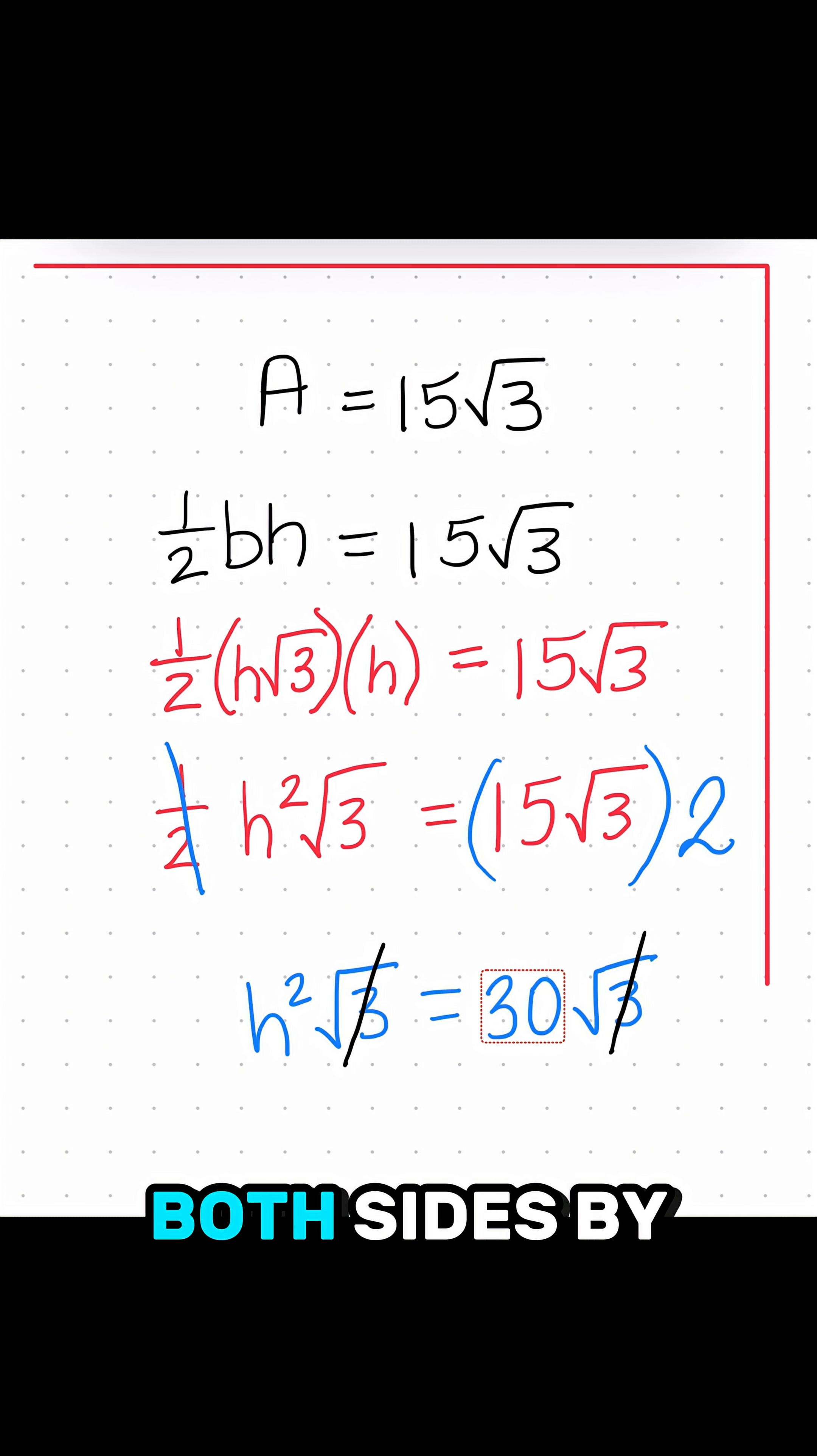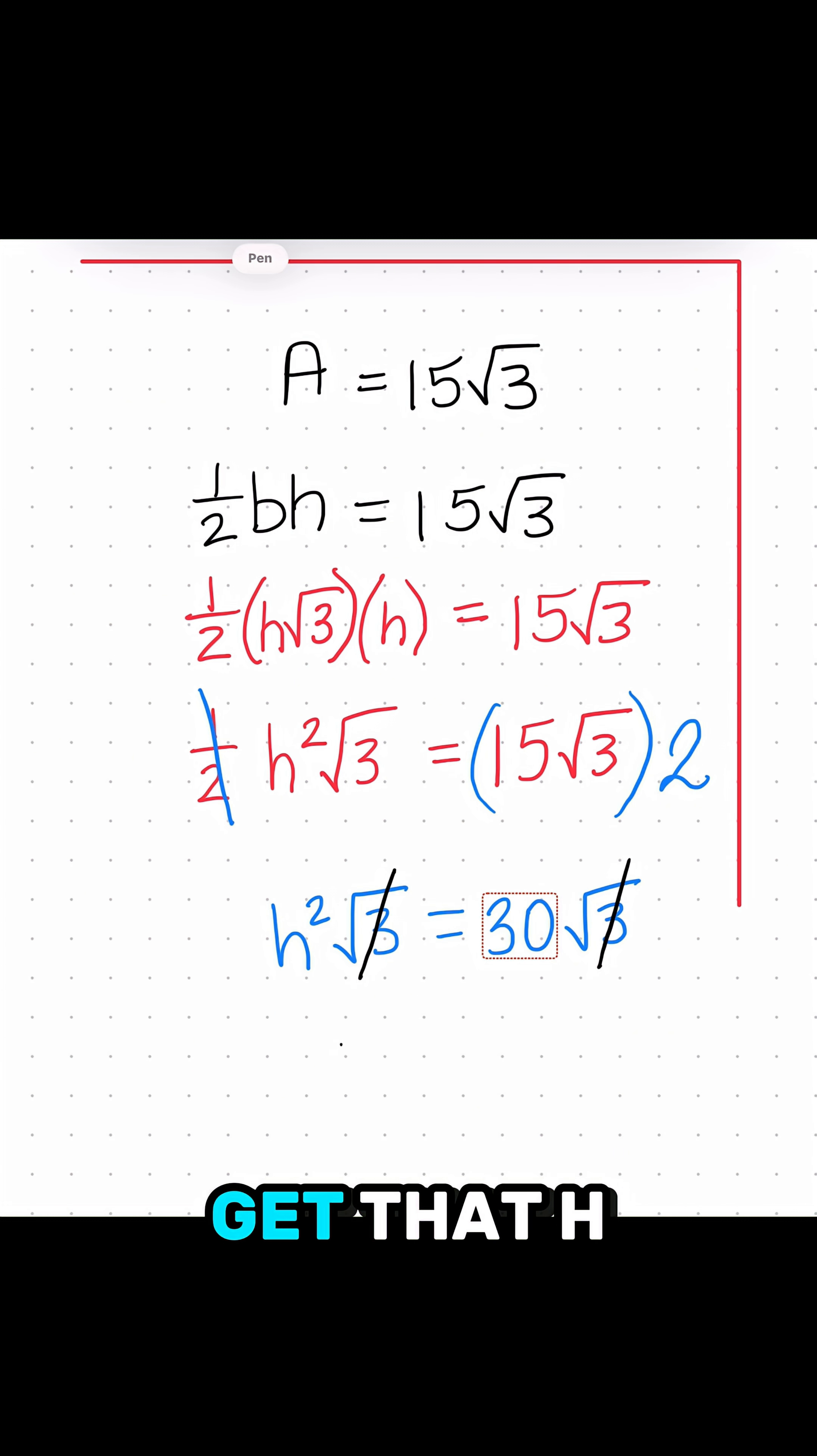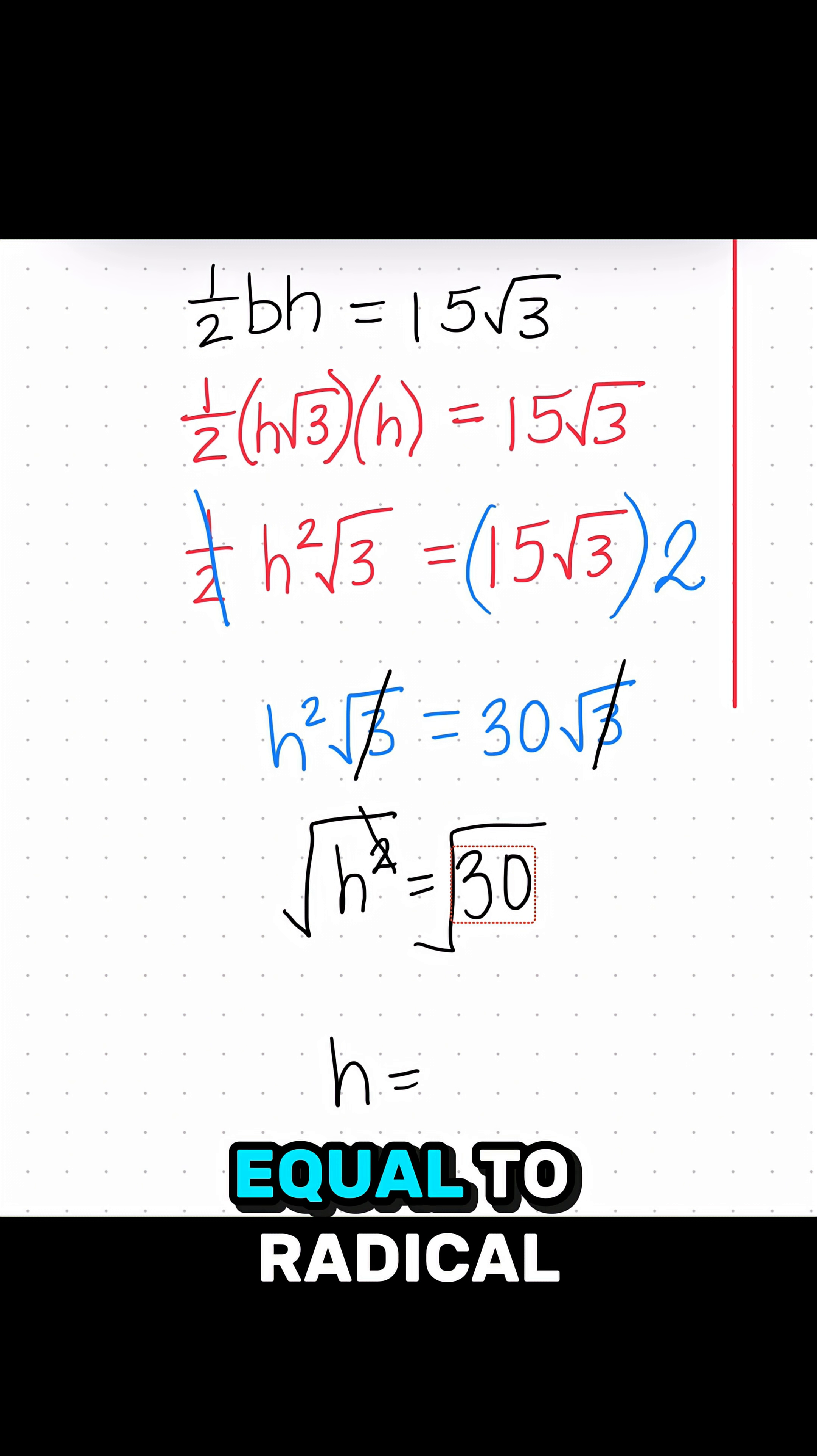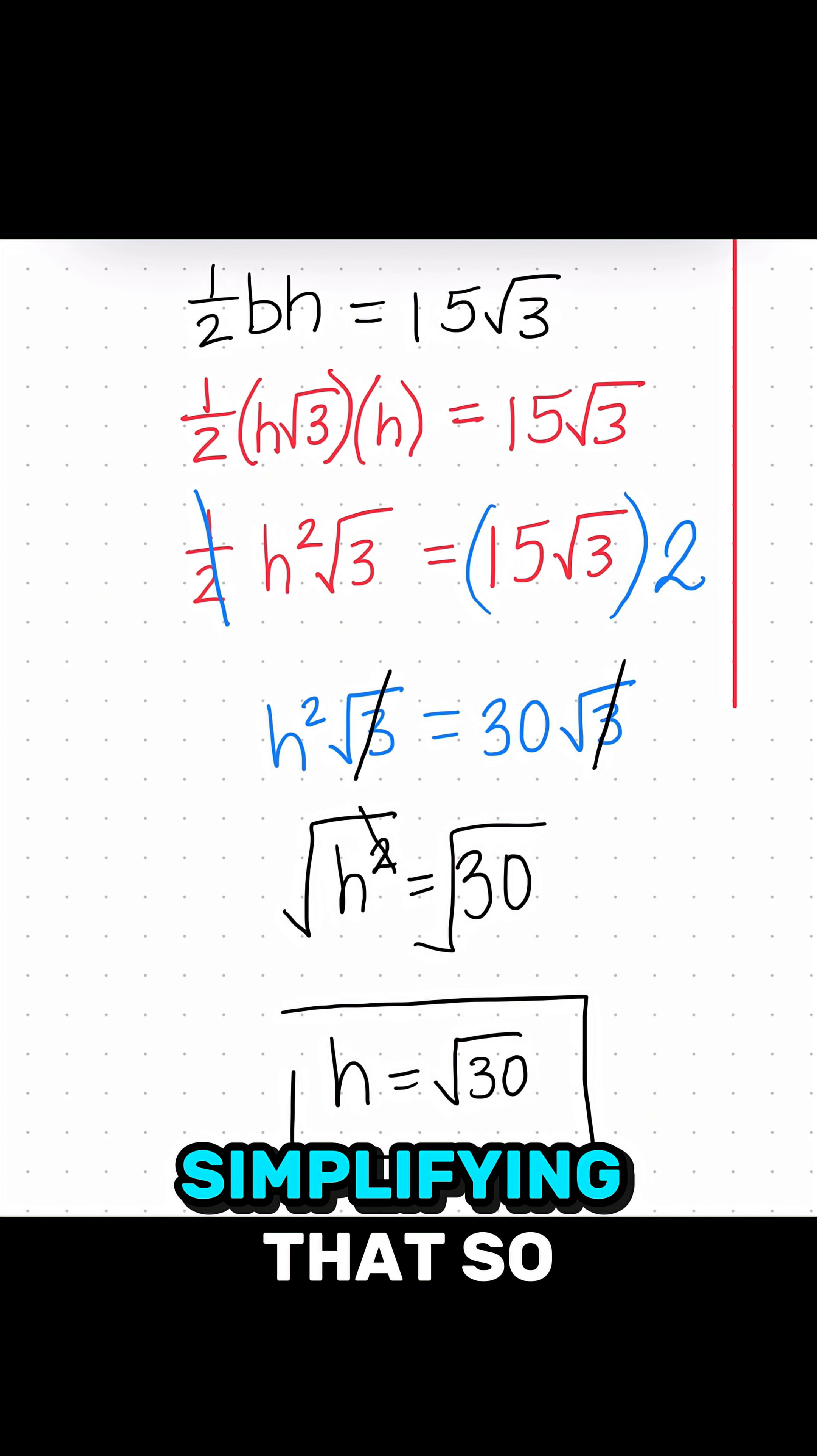Or in other words, I'm basically dividing both sides by radical 3, which cancels it out on both sides. And so I get that h squared is equal to 30. And then I just want to square root both sides to solve for h. So I get that h is equal to radical 30. And since that's not a perfect square root, we won't be simplifying that.